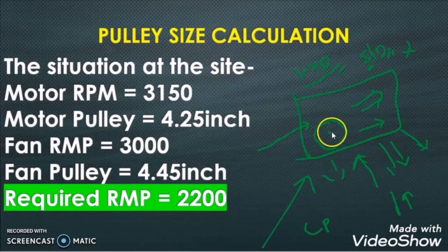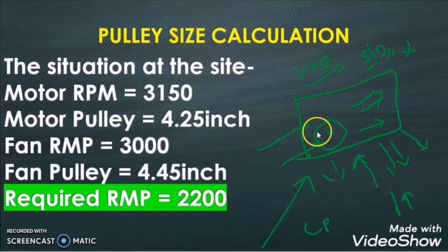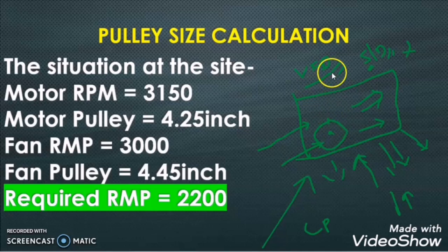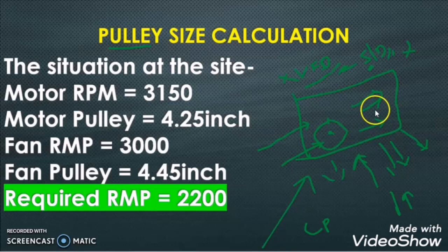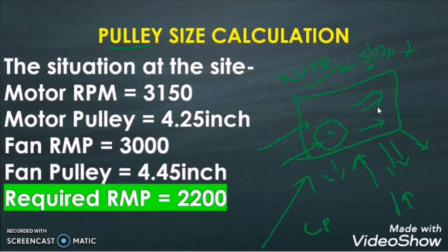We cannot run the motor all the time in star configuration and we don't have a VFD. The third solution would be to replace the motor with a lower RPM rating, but that is not practical due to the huge cost. Buying a VFD was also ruled out due to cost impact. The last solution is the pulley — if we change the pulley at the motor or fan blade side, we can reduce the RPM of the fan, reducing air flow velocity so the air will no longer carry water droplets.